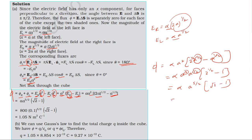With alpha equal to 800, substituting the values, the total flux through the cube equals 1.05 Newton meter squared per Coulomb.